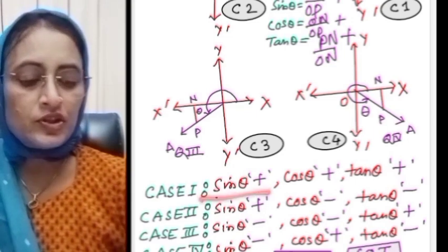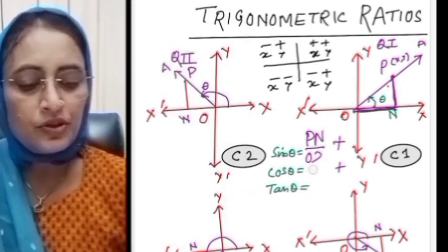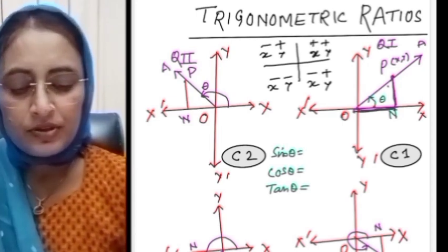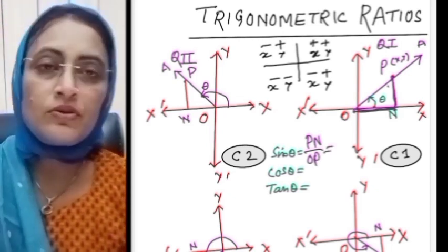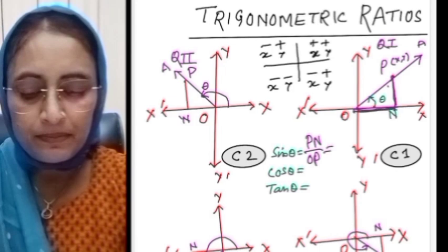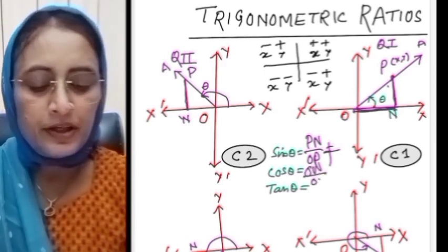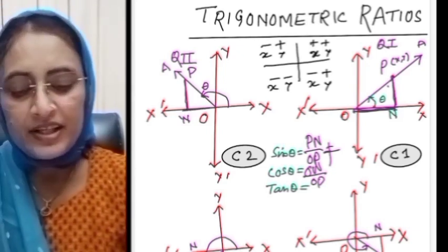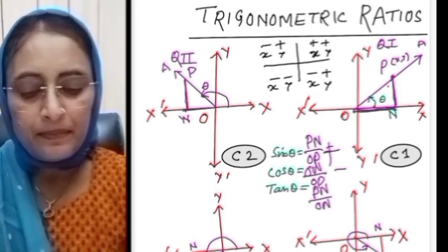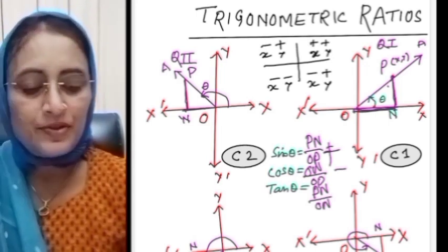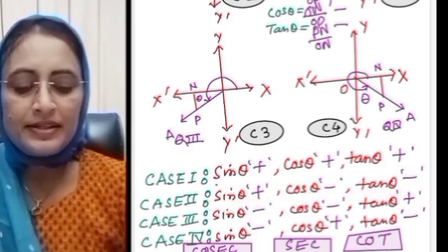In case one: sin theta positive, cos theta positive, tan theta positive. In the second quadrant: sin theta = PN/OP — PN is positive and OP is always positive, so sin theta is positive. But ON is negative, so cos theta = ON/OP is negative. Tan theta = PN/ON — PN is positive and ON is negative, so tan theta is negative. Therefore in quadrant two: sin theta positive, cos theta negative, tan theta negative.